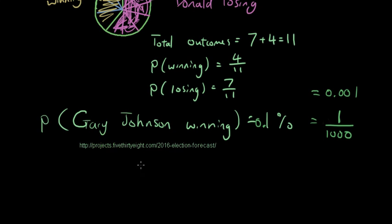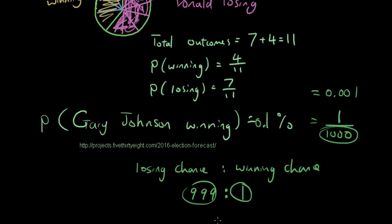So if you want to write it as odds, then it's the losing chance to winning chance. So the chance of him winning is 1. And the chance of him losing is 999. And these two numbers, they add up to 1000. So that's how you convert between odds and probabilities.